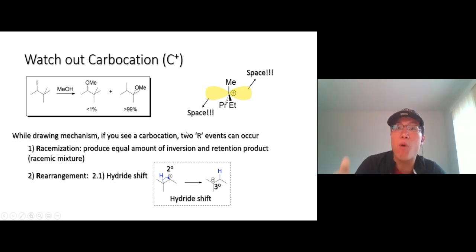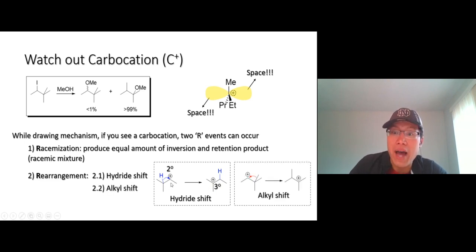Or another R: rearrangement. If the carbocation is not stable enough, find something that can make it more stable. For example, you see secondary carbocation - is it stable? Can you make it more stable? Look for hydrogen on the right side - nope, that's going to be primary. Look from the left side - oh, tertiary right there. Move the hydride shift, you will get tertiary carbocation. This we call hydride shift.